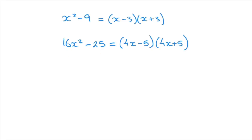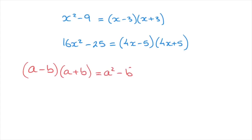The formula we're using to do this is known as the difference of two squares. The difference of two squares states that a minus b times a plus b equals a squared minus b squared. This can be read either from left to right or from right to left. When factoring quadratics we'll be reading it from right to left — in other words, a squared minus b squared equals a minus b times a plus b.